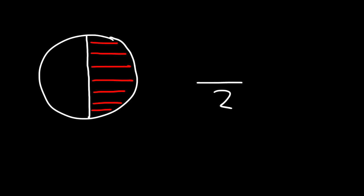I'm going to shade only one portion of those two parts. So what fraction of the circle is shaded? There are two parts of the circle and only one of those two parts is shaded, so we could say that one half of the circle is shaded. Now let me give you another example.